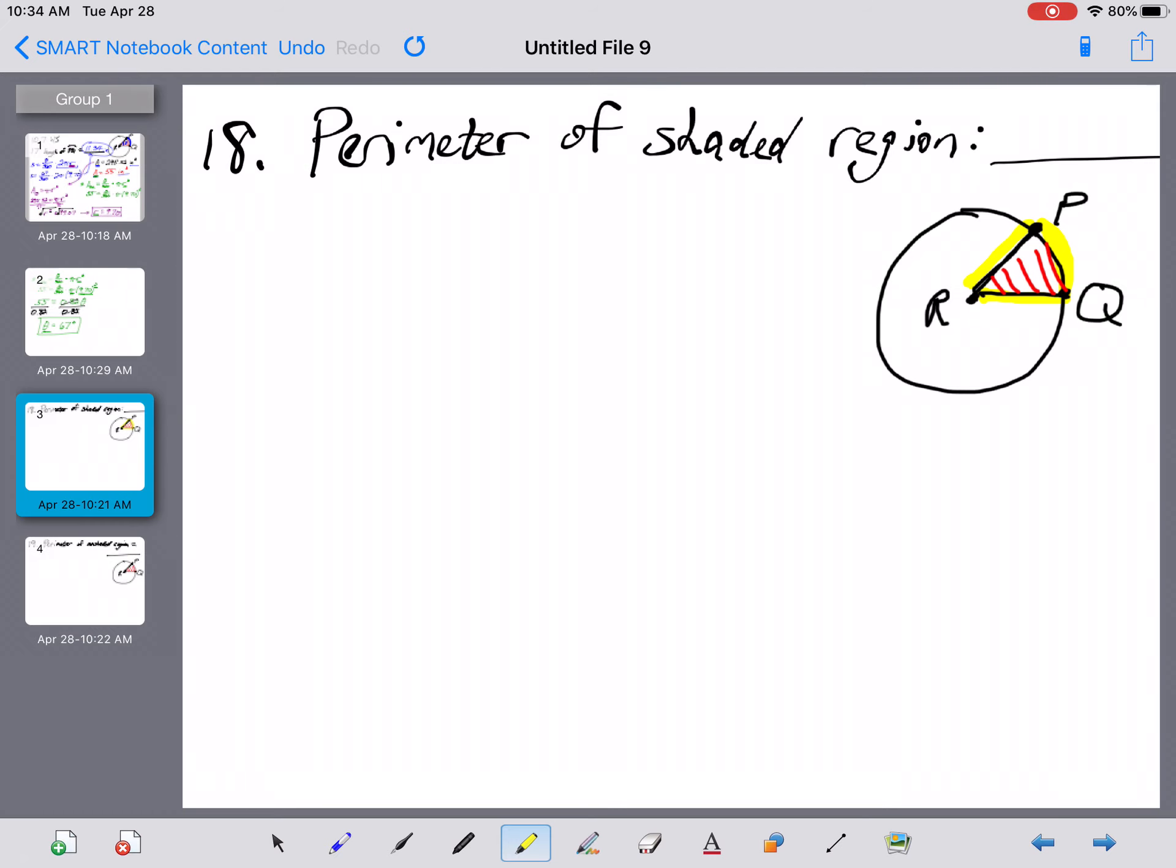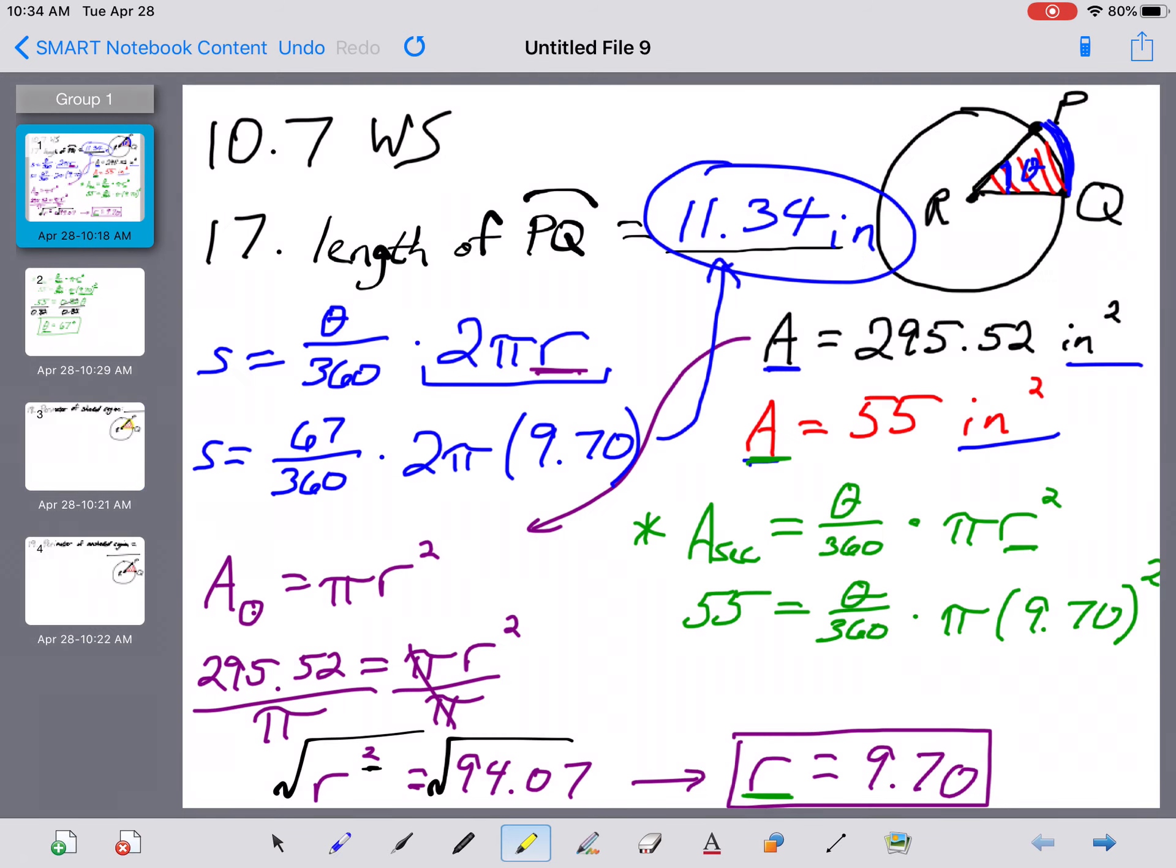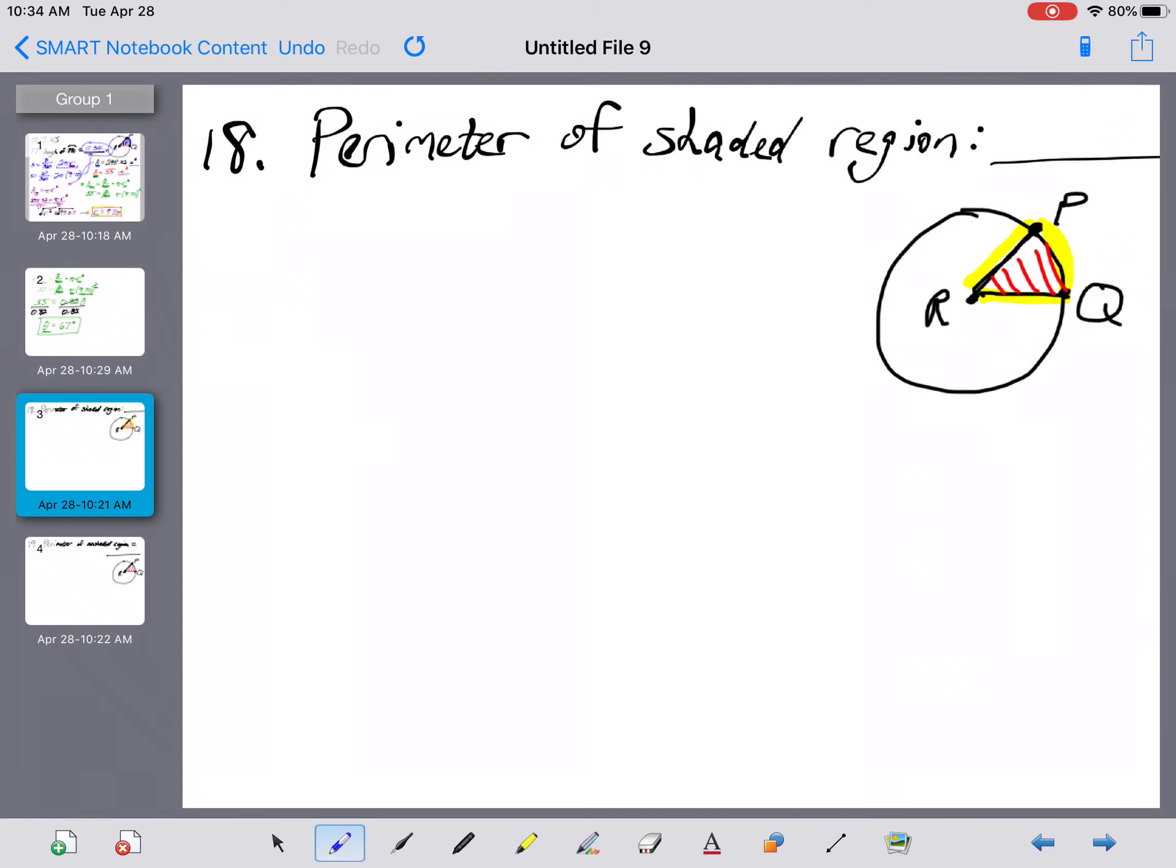RQ and RP are both radii of a circle, and we found a while ago here that the radius of this circle was going to be 9.70. So I know that RQ here has a length of 9.70, and I know that RP has to have the exact same length of 9.70.